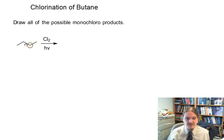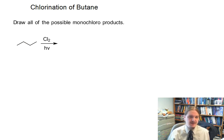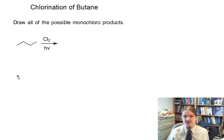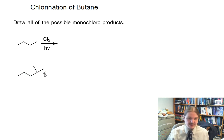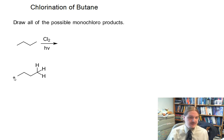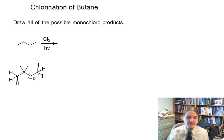Butane has a couple of different types of hydrogens — primary and secondary — and there are different possible products that could form depending on whether chlorine substitutes out any particular one of them. One approach to solving this problem might actually involve taking some effort to draw in all of the hydrogen atoms. It takes me a little bit of time, so hang out with me.